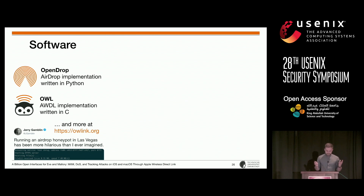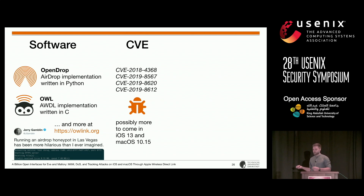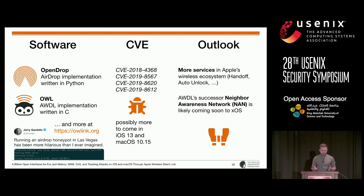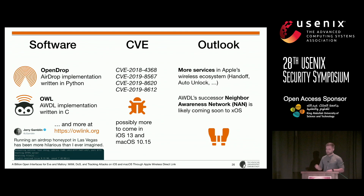Our vulnerability disclosures resulted in several fixes from Apple, and we received several CVE numbers, with possibly more to come in the next major OS releases. We will direct our efforts towards other services in Apple's wireless ecosystem, such as Handoff and AutoUnlock. We're also excited to review AWDL's standardized successor, called Neighbor Awareness Networking, which is already available on Android.